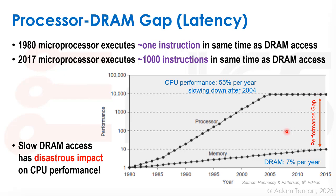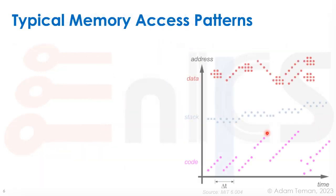CPU performance increased by about 55% per year until around 2004, whereas DRAM only increased about 7% per year. That created a big gap between the performance at which we can access DRAM versus the performance at which the processor operates. Slow DRAM access has a disastrous impact on CPU performance because our main memory is DRAM, and once it takes a lot of time to access it, that really slows us down. Let's look at typical memory access patterns to understand the main method to address this DRAM gap.